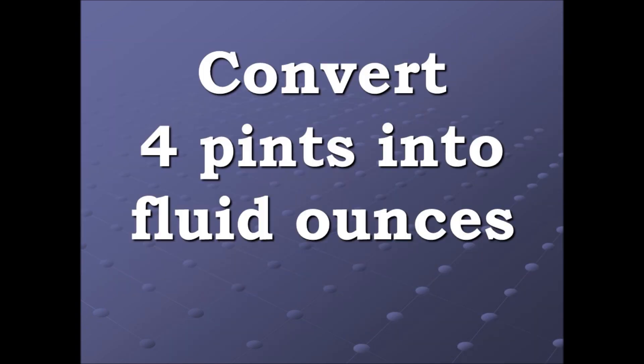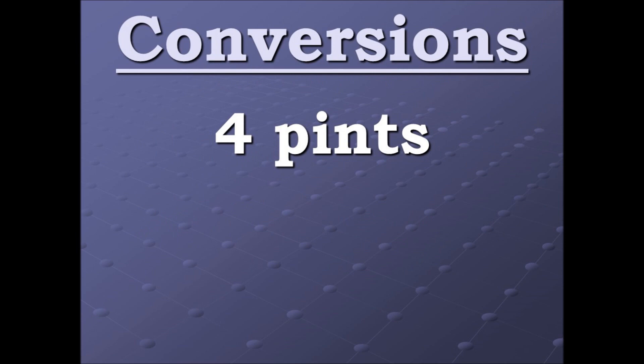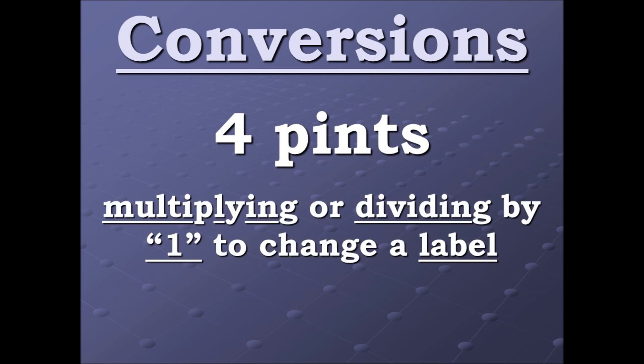So now what we're going to be doing is converting four pints into fluid ounces. So we begin with the four pints, and what we're going to be doing is multiplying or dividing by one in an effort to change a label.